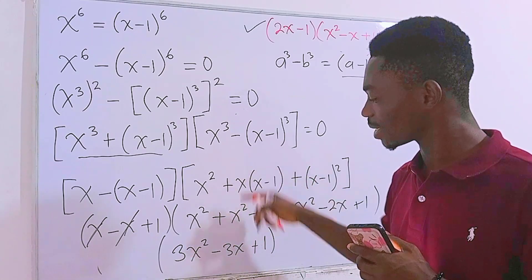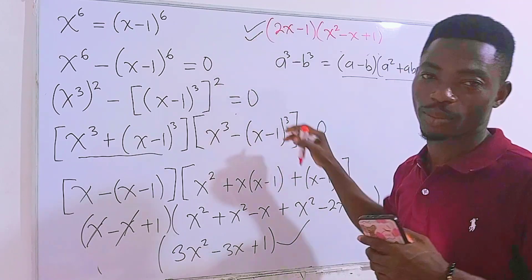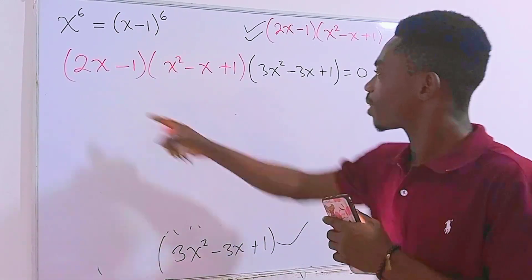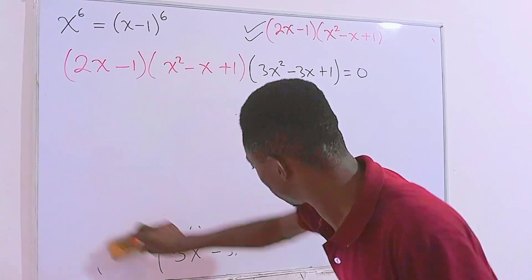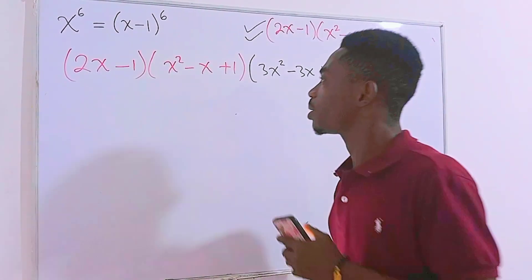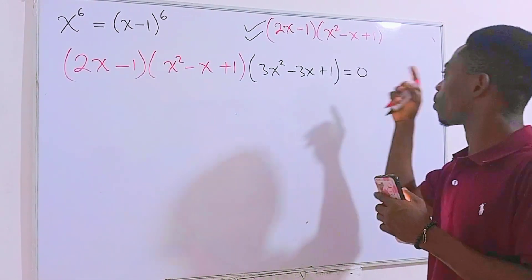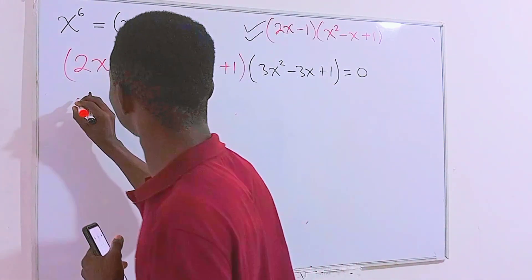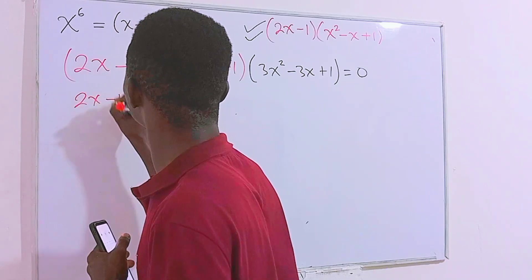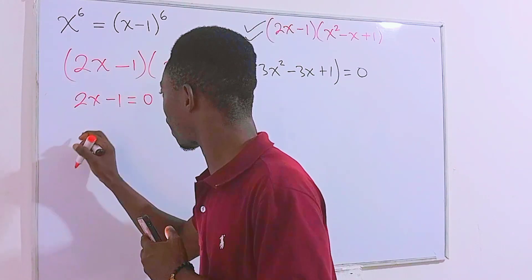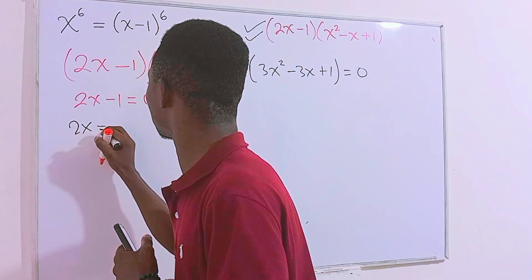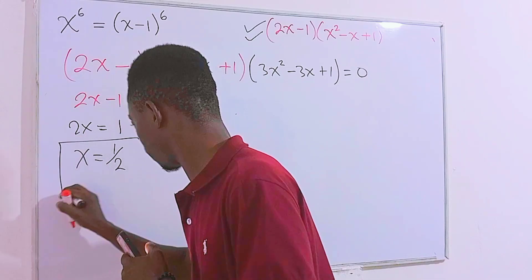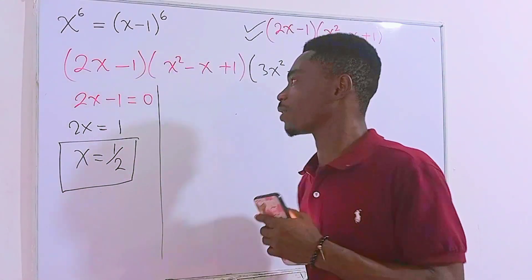Now that we have all the factors, I'll put all of them together and equate to 0. We have a product of three factors equal to 0, so we form three equations. The first factor: 2x minus 1 equals 0, so 2x equals 1, which gives x equals 1/2. That is the solution from the first factor.